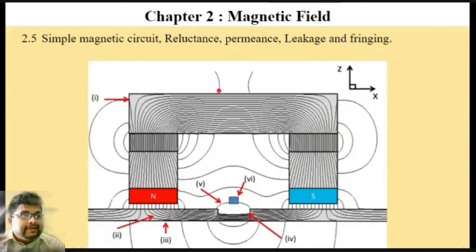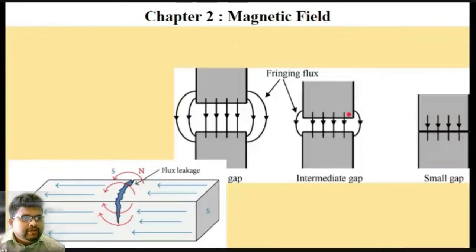This particular leakage causes you to require more MMF. More MMF means you are supposed to supply a higher amount of current to provide the same magnetic effect.